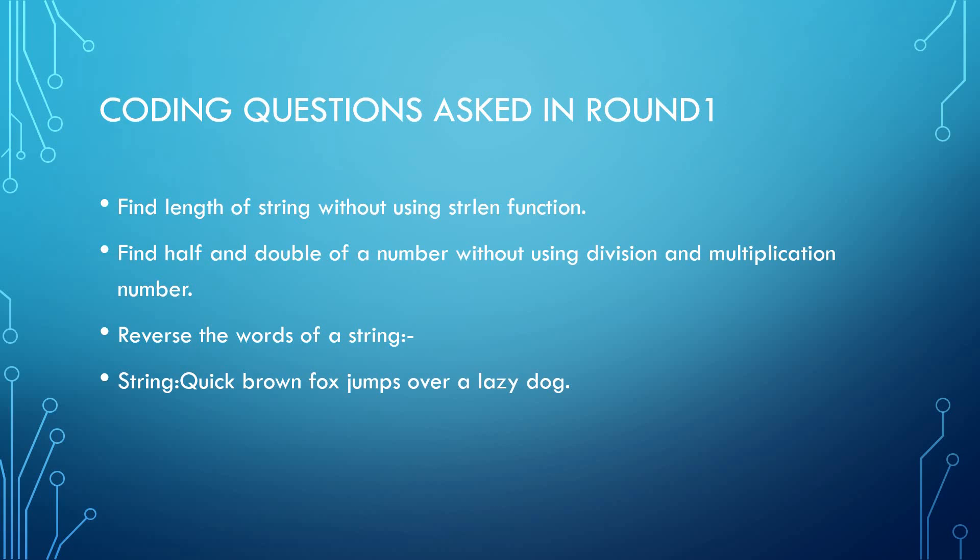The third coding question involved reversing the words of a string. The string given was 'quick brown fox jumps over a lazy dog.' To solve this, you need to be very good at pointers.